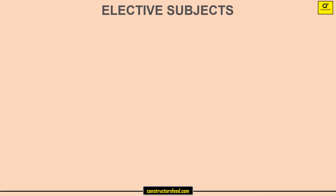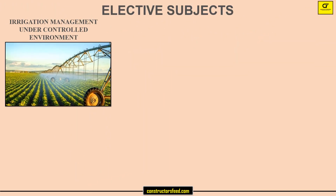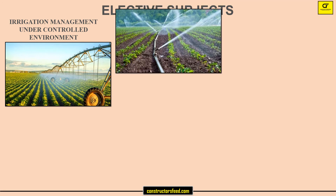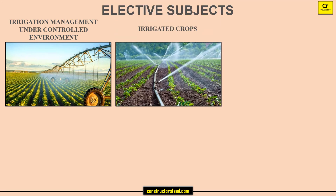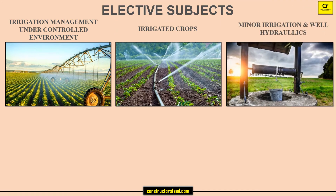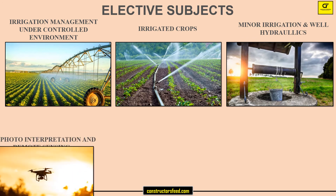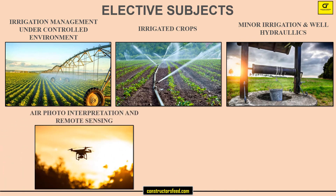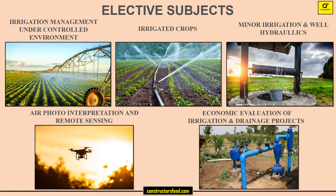Elective subjects include: irrigation management under controlled environment, irrigated crops, minor irrigation and well hydraulics, air photo interpretation and remote sensing, and economic evaluation of irrigation and drainage projects.